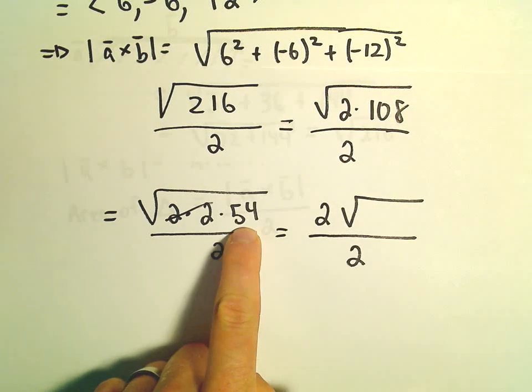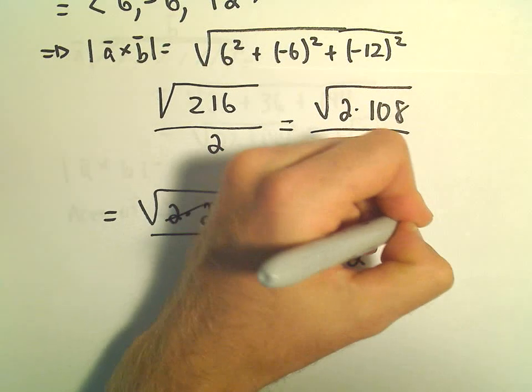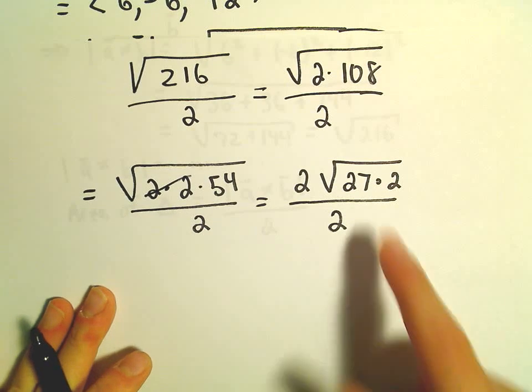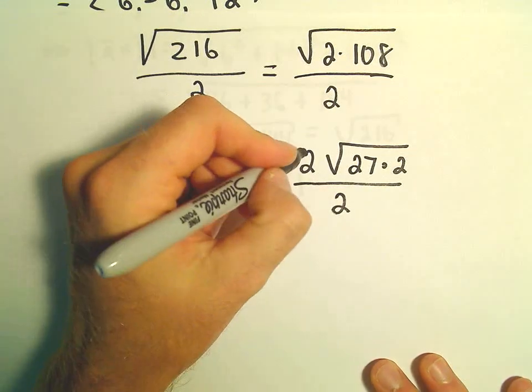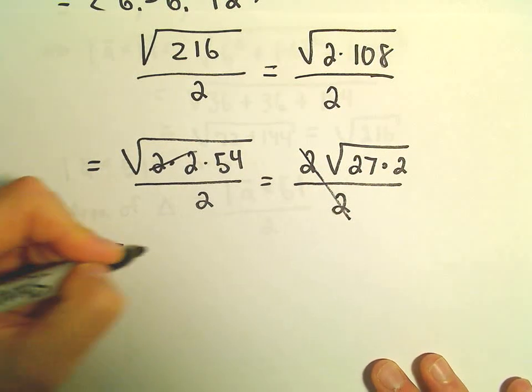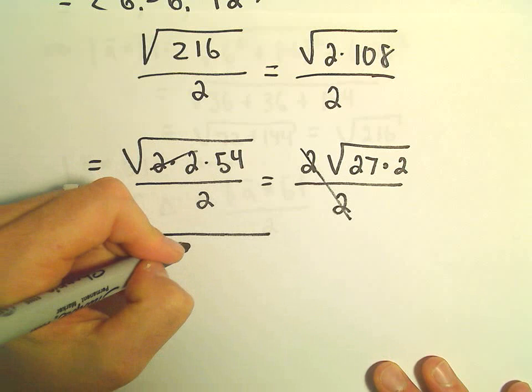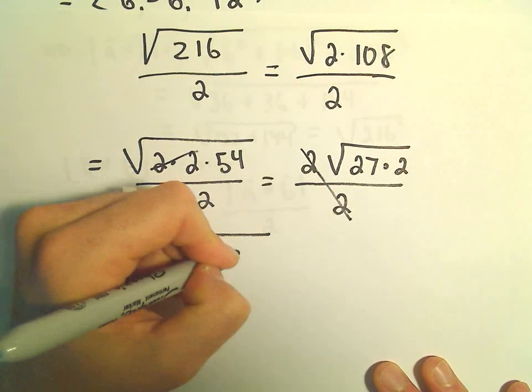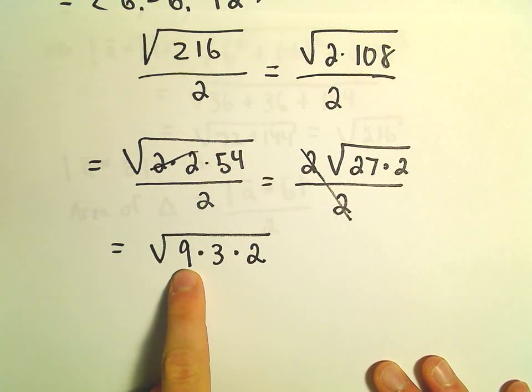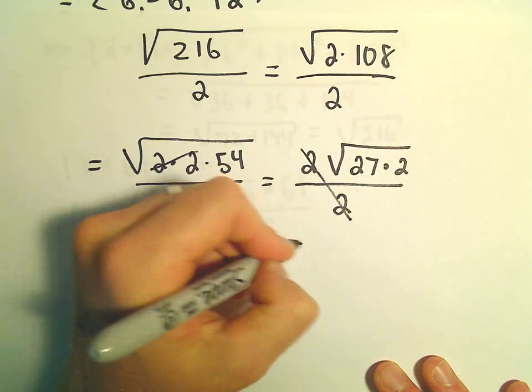The square root of 54, we can write that as 27 times 2. I always just break things down in evens. So the 2s we could cancel. Well, the square root of 27 times 2, we could really write that as 9 times 3 times 2. Well, the square root of 9, we can take, we can pull that out.